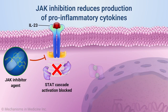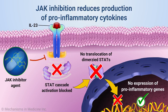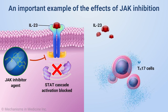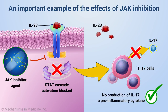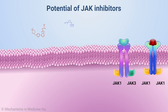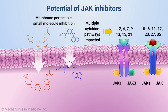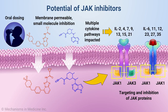JAK inhibition potentiates downstream inhibition of cytokine synthesis by reducing the production of pro-inflammatory cytokines. An important example is the prevention of the pro-inflammatory cytokine IL-17 from being produced by T-Helper 17 cells, even when in the presence of IL-23 stimulation. Ultimately, JAK inhibition can impact multiple cytokine pathways by utilizing small-molecule inhibition, which offers the potential for oral dosing and the ability to modulate the extent of cytokine inhibition during a dosing period.